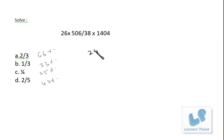Let me show over here: it's 26 into 506 by 38 into 1404. Now this I assume to be around 1500, so it will be cancelled like almost three times. It will be less than three definitely, but the options are quite far from each other, that's why I'm just taking it as 3.